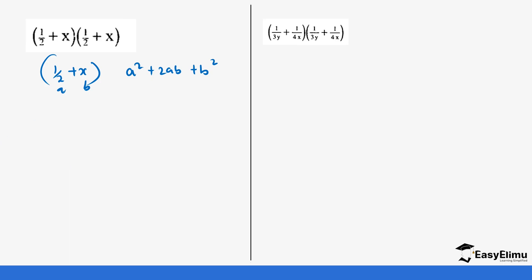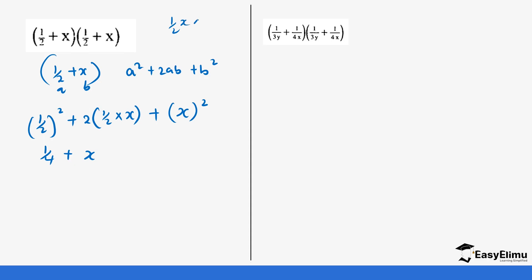For (½ + x) squared: a is ½ and b is x. Using a squared plus 2ab plus b squared: (½) squared is ¼, plus 2 times ½ times x — the 2 and 2 cancel — giving x, plus x squared. To remove the fraction, multiply everywhere by the LCM of 4, giving 1 plus 4x plus 4x squared.